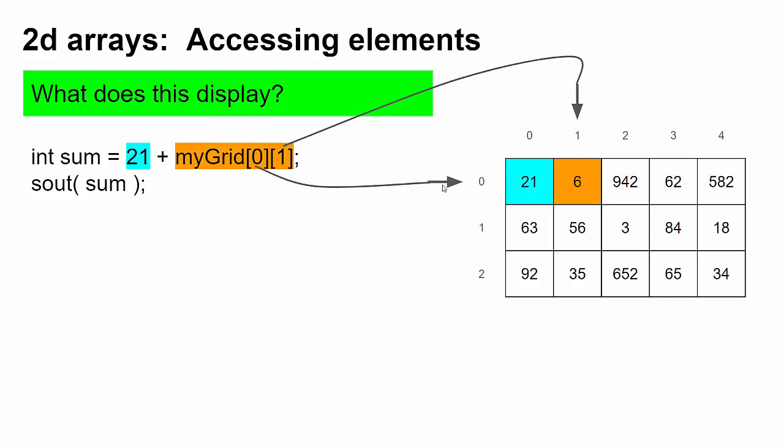Then myGrid[0][1] refers to row zero, column one. And so six is the value there. So this gets replaced by six. And so when you add them together, you get that the answer is 27.